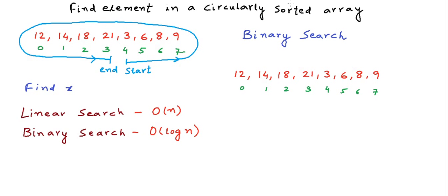Let us pick up this circularly sorted array — the example that we have on the left. We will use a variation of binary search to find an element x in the array. Like we do in normal binary search, we will first define two indices, low and high, initially pointing to the first and last elements in the array respectively. Then we find the mid index as (low + high) / 2.